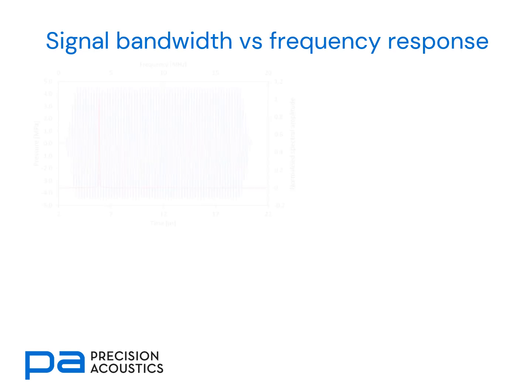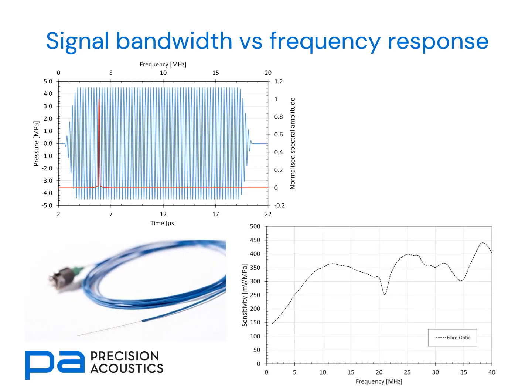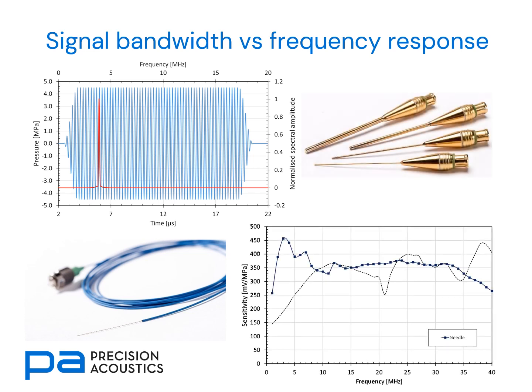However, we may be looking at a much more narrow band signal, as we often find with therapeutic ultrasound devices. You can see a much longer time duration signal but with very limited bandwidth. In this case, were we to measure the response with a fibre optic or a needle hydrophone, although these have got variations as a function of frequency, within the bandwidth of the source this variation is minimal, and we would get a very good representation of our underlying time domain function.